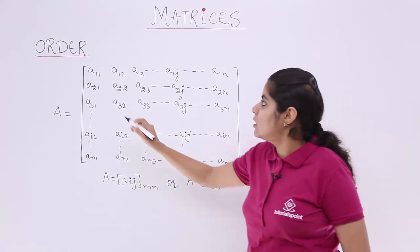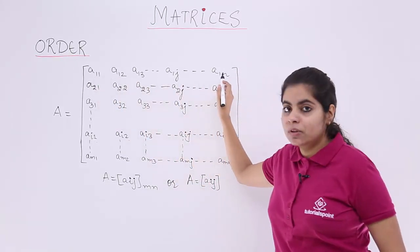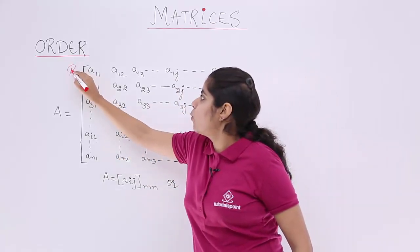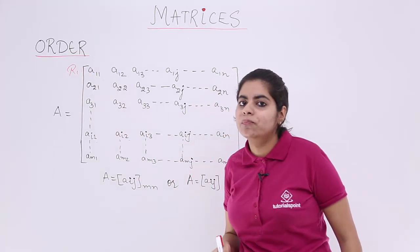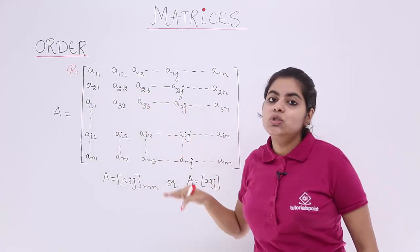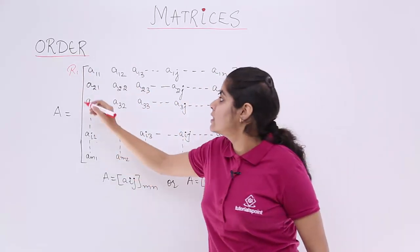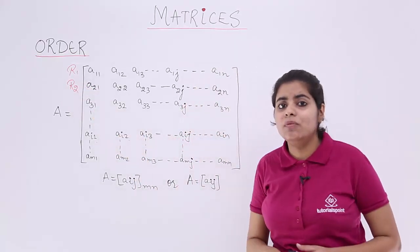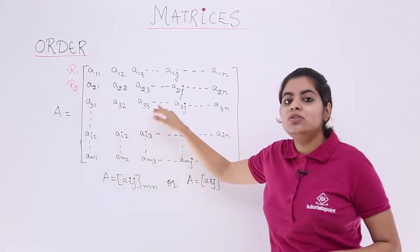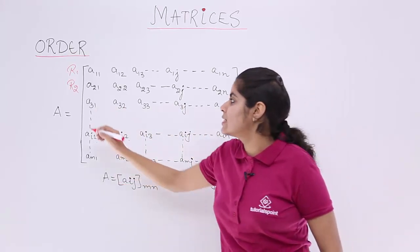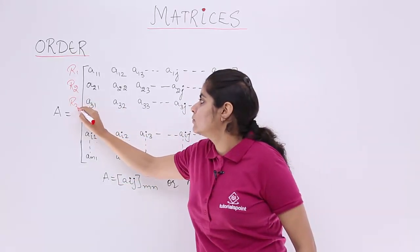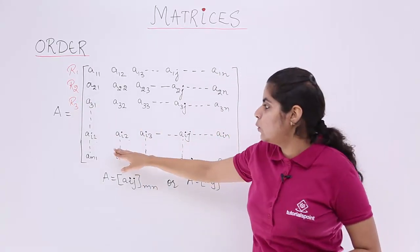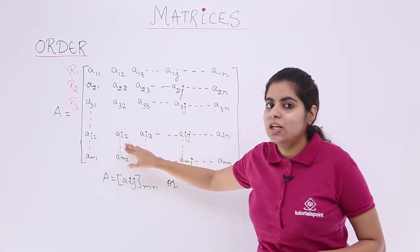This is the first row — the horizontal things are the rows, so this is R1, the first row. Below that, a21, a22 and everything is the second row, R2. Then a31, a32 and so on is the third row. Coming downwards, we have ai1, ai2 and so on.